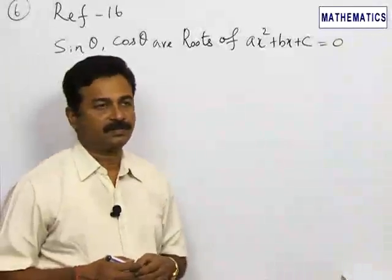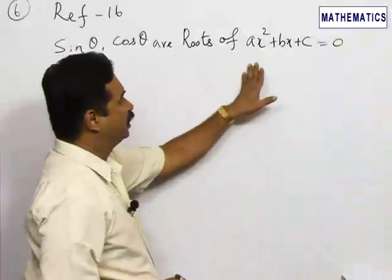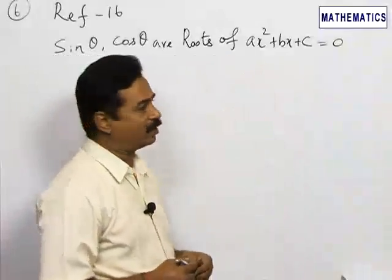Now, let us refer to question number 16. It is given that sin θ and cos θ are the roots of the equation ax² + bx + c = 0.